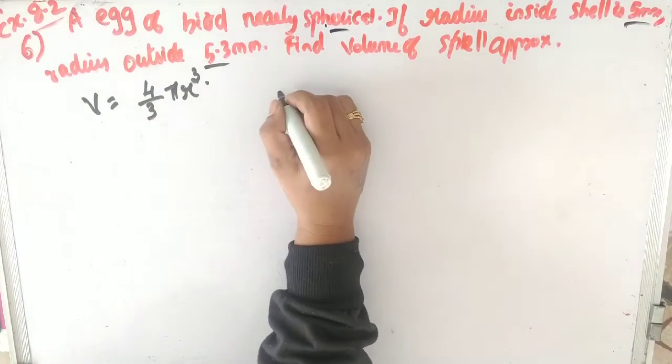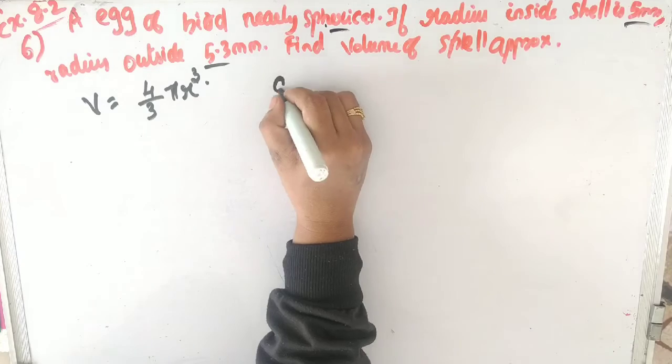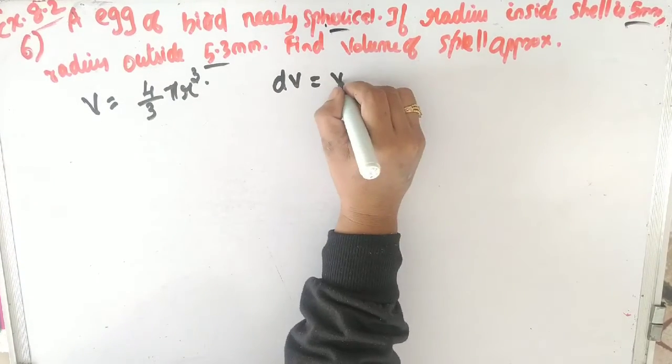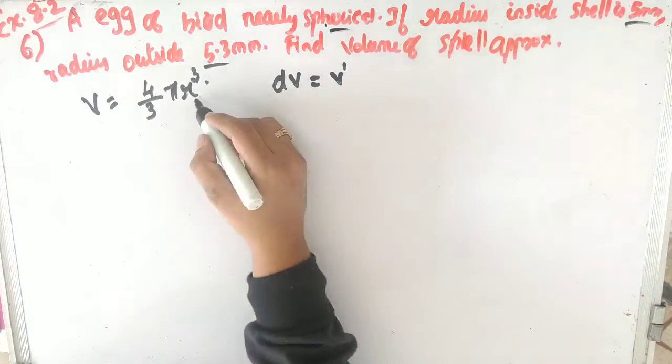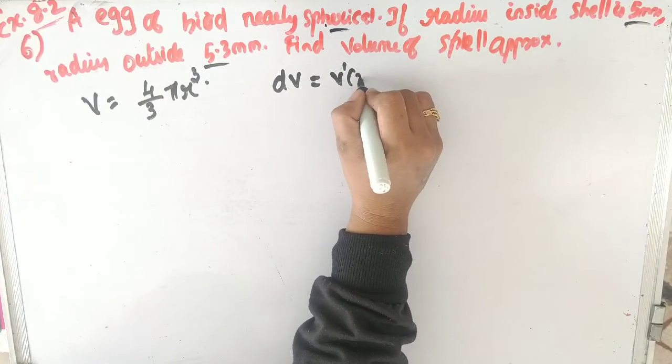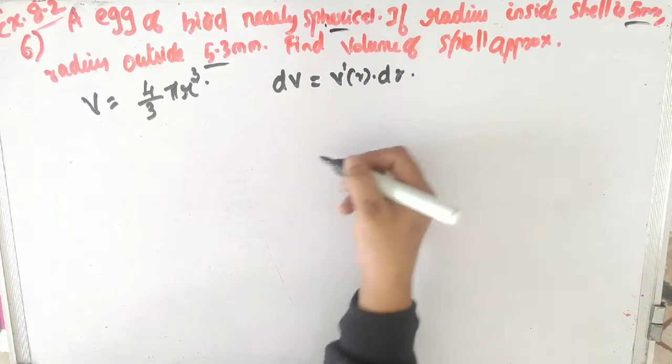The inner radius is 5mm, outer shell is 5.3mm. dV is V'(r) times dr, where dr is the change in radius.